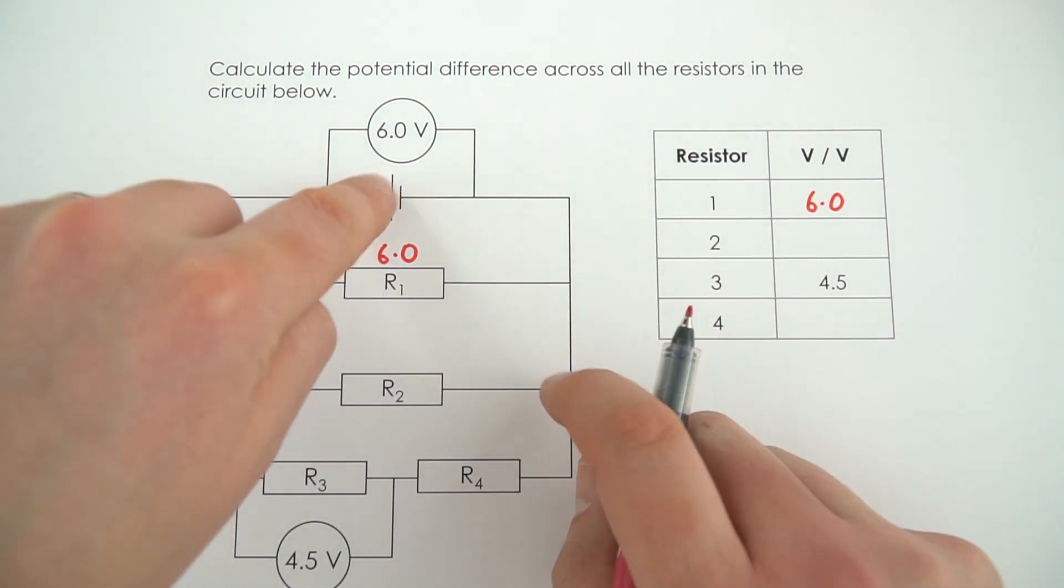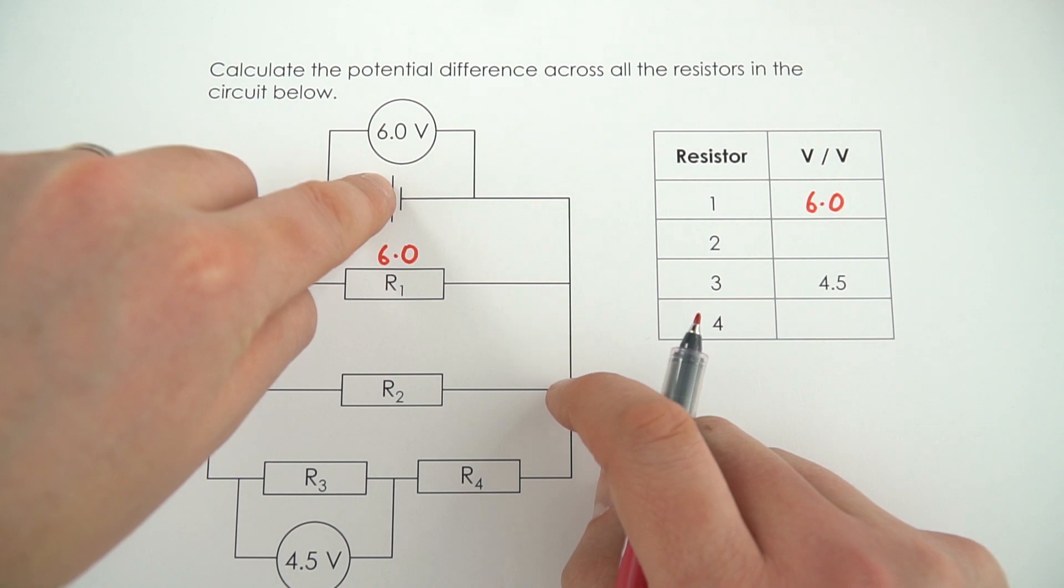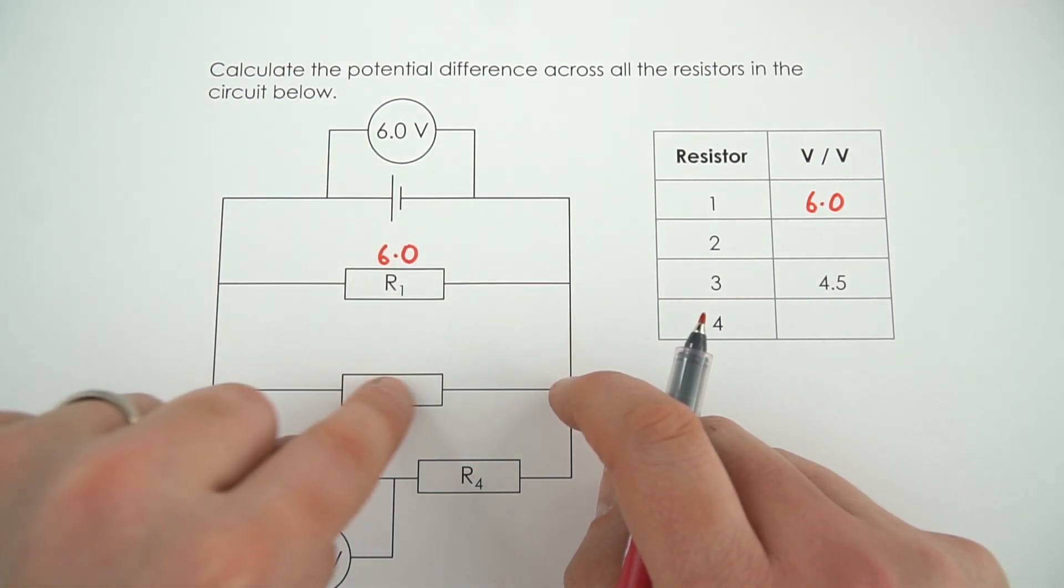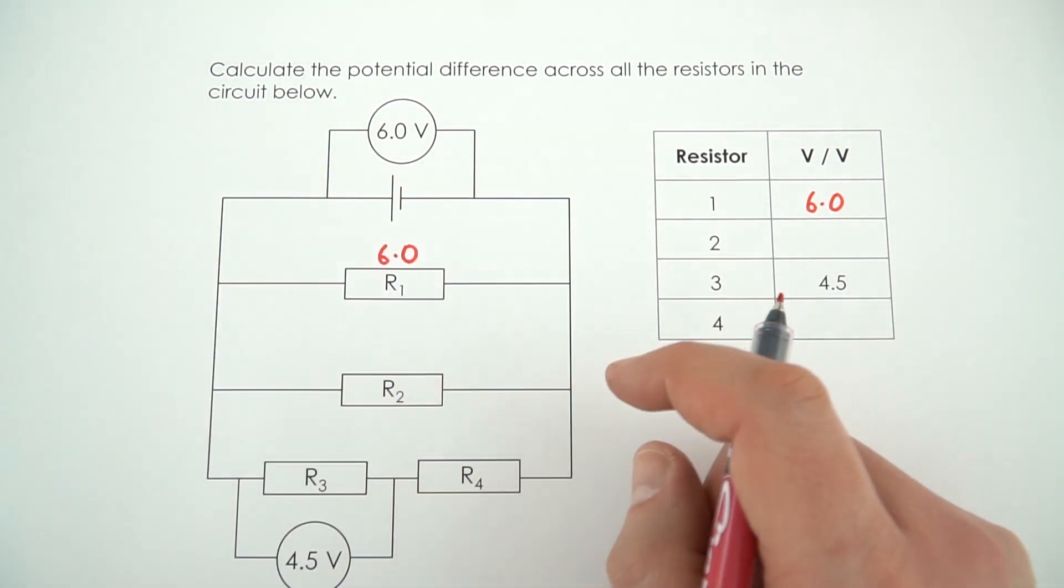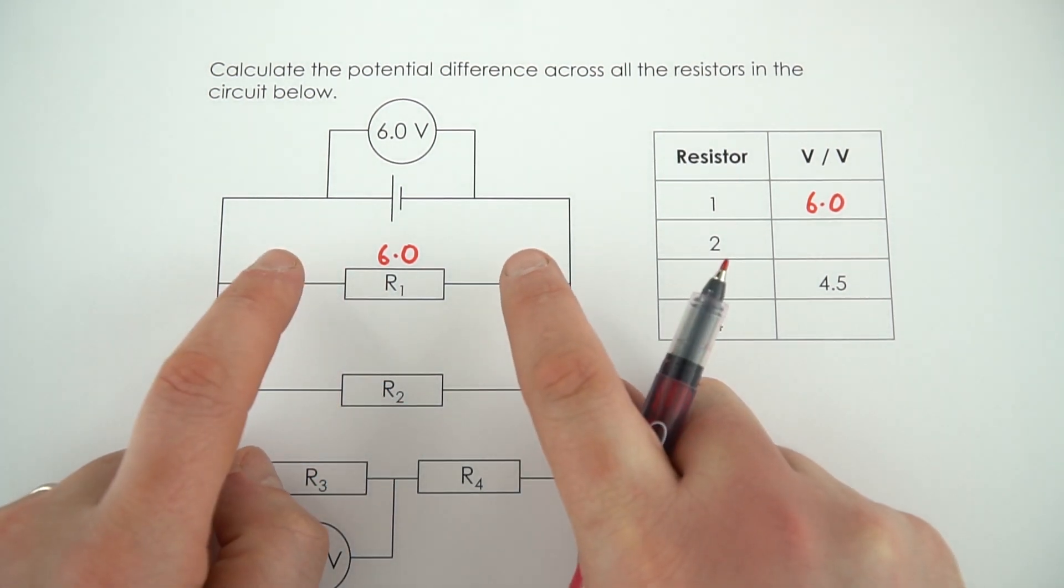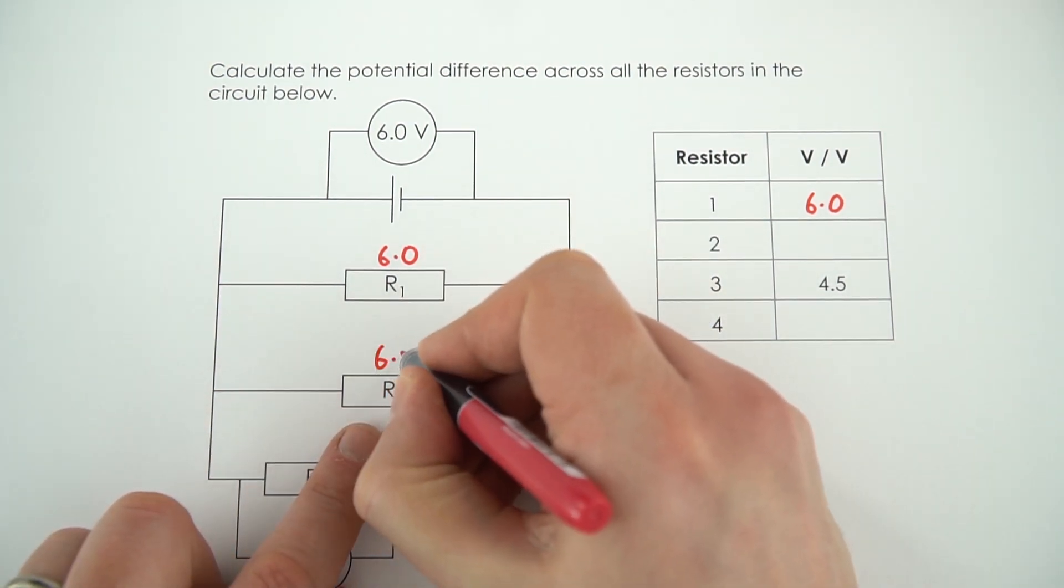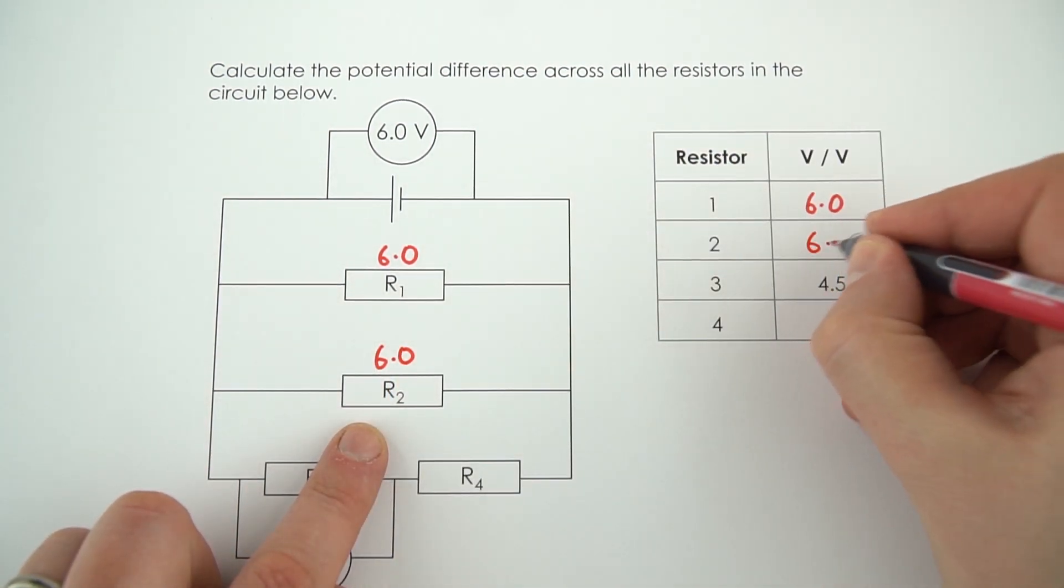Now there's another loop here that we can think about and it's a parallel loop, but you've got a cell here of 6 volts and it can go through this resistor and around here. And again, the potential difference across this loop in the parallel circuit is going to be the same as the potential difference across that loop. So that's 6. The value across R2 is also 6.0 volts.